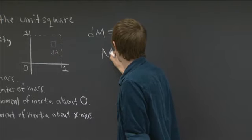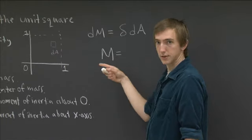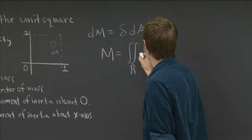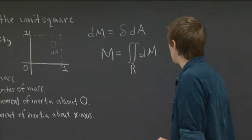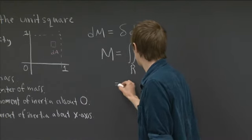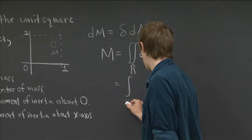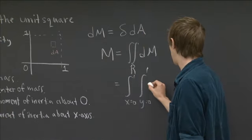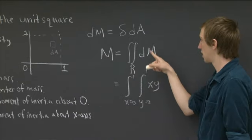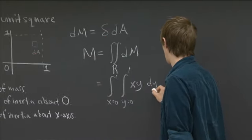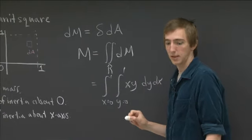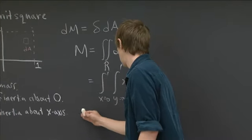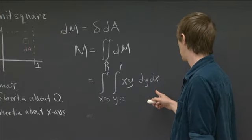Now once we write it this way, then our total mass for the entire square is just the integral over the region of all the little contributions dm. And so in particular, this is just the integral from x equals 0 to 1, y equals 0 to 1, we have x, y, that's our density, and then we have dy, dx. And this is an integral which we can just compute.